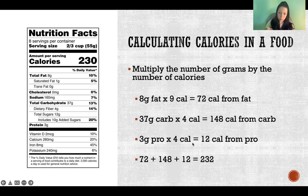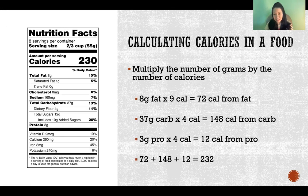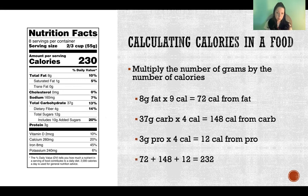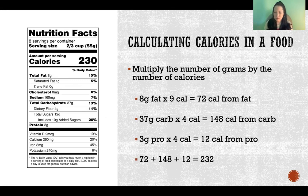So if we add all of those up, we get 232, which you'll notice is two more than 230 — which is what it says on the label. So when you do the math this way, it will always be two or three calories off from what it says on the label. That's because when they put the eight grams, the 37 grams, the three grams, they're rounding. They're basing the total calories on the label on the decimal points they use in the total grams for each macronutrient, but we don't know what those decimals are, so we're using the whole number. It'll always be off by a couple, but that's really no big deal.